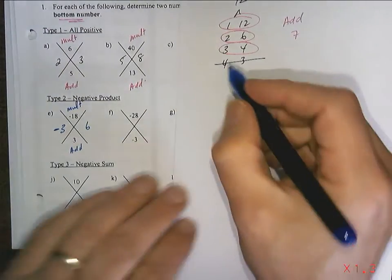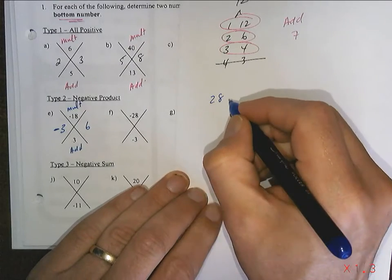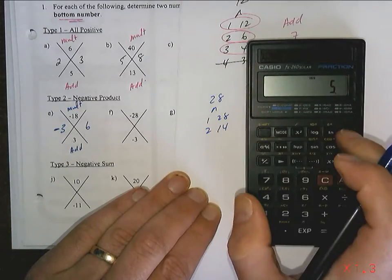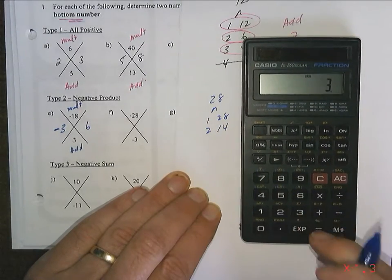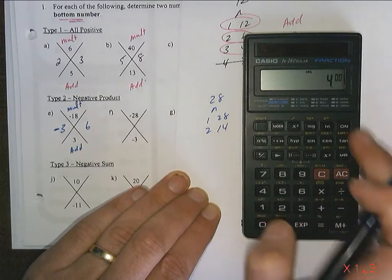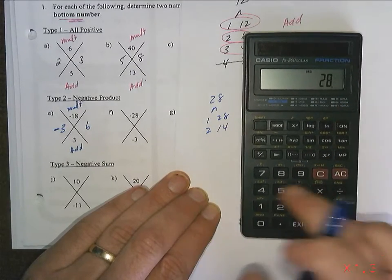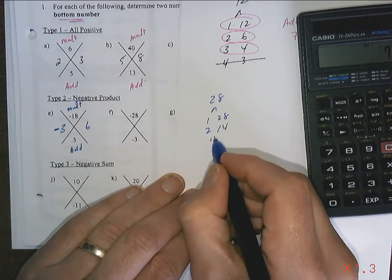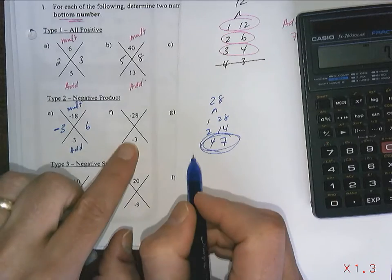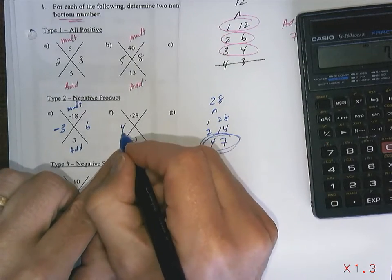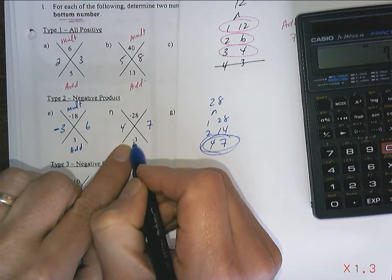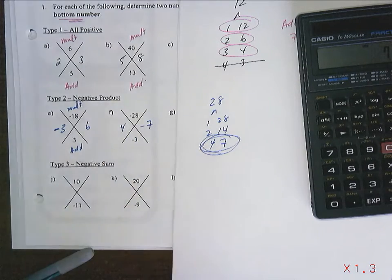28. That one's a little bit tougher. I'll do my factor tree. 1 and 28, 2 and 14, 28 divided by 4 is 7. And 4 and 7 give 3. That's my 3 that I want. So, 4 and 7, but I need a negative 28. So, 1 has to be negative. And they add to give a negative 3. So, it's negative 7.